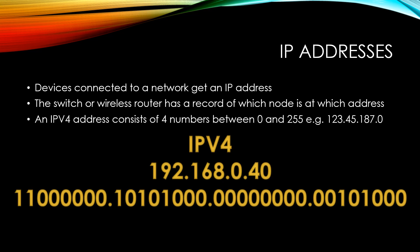An IPv4 address consists of four numbers between 0 and 255, each separated by a dot. As we know from the data representation unit, to make a number between 0 and 255 uses 8 bits in binary. So in reality what we actually have is a 32-bit number used as our IPv4 address, which gives us 2 to the 32, or over 4 billion possible addresses to use.